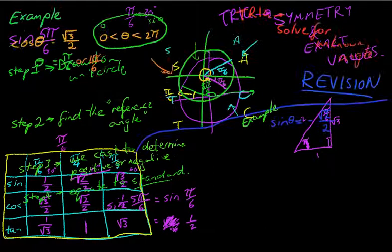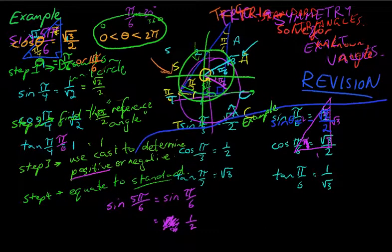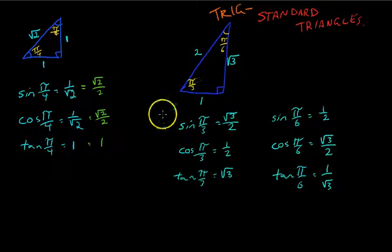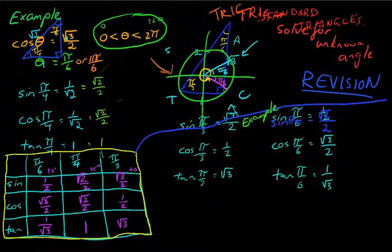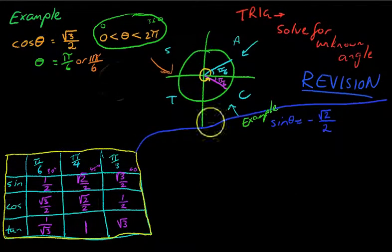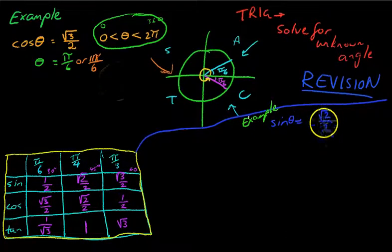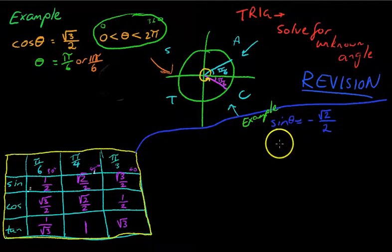So you should be able to jump into your table or use your standard triangles to come up with what the answer is. I'll use my table because it's a little quicker if I can come up with where it is. Sin θ equals negative root 2 on 2. We can see that root 2 on 2, it's going to be π on 4.